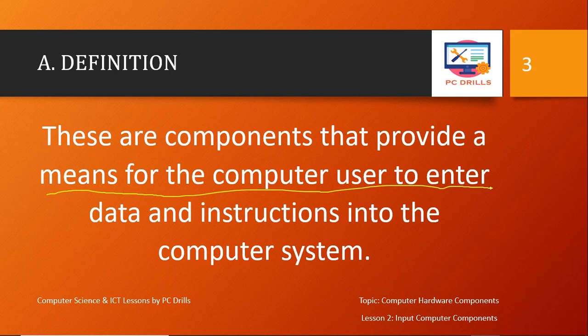For example, a keyboard that you use to type — you are inputting letters into a computer, so you can call a keyboard an input device. If you have a microphone that you are using to record something and store it in your computer, it is also called an input device. Even a phone is an input device — when you record a WhatsApp message, that is also an input operation.